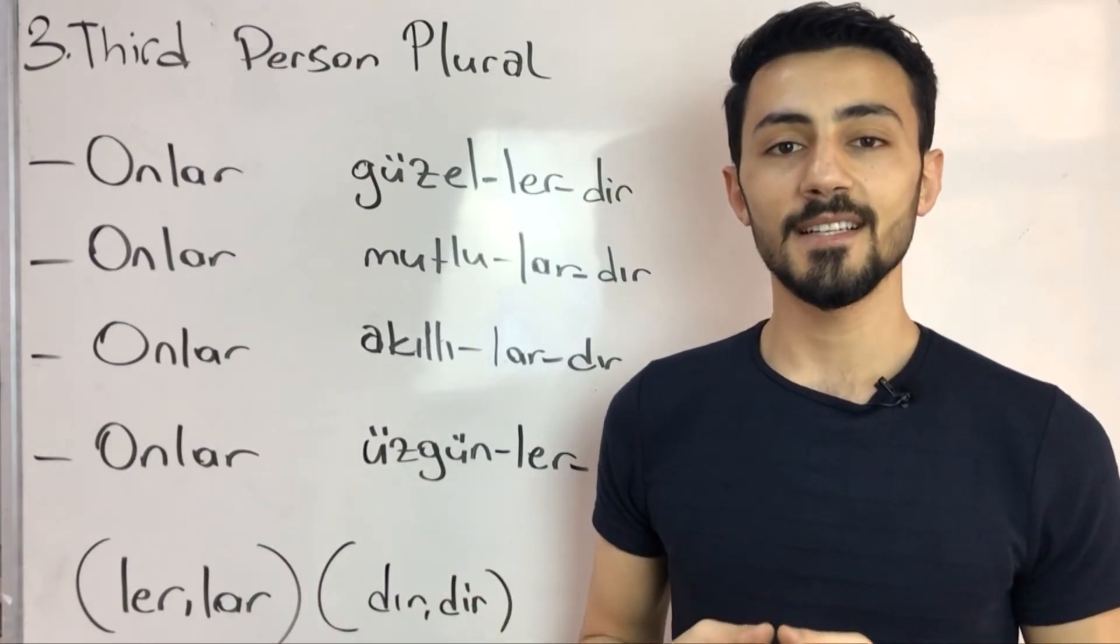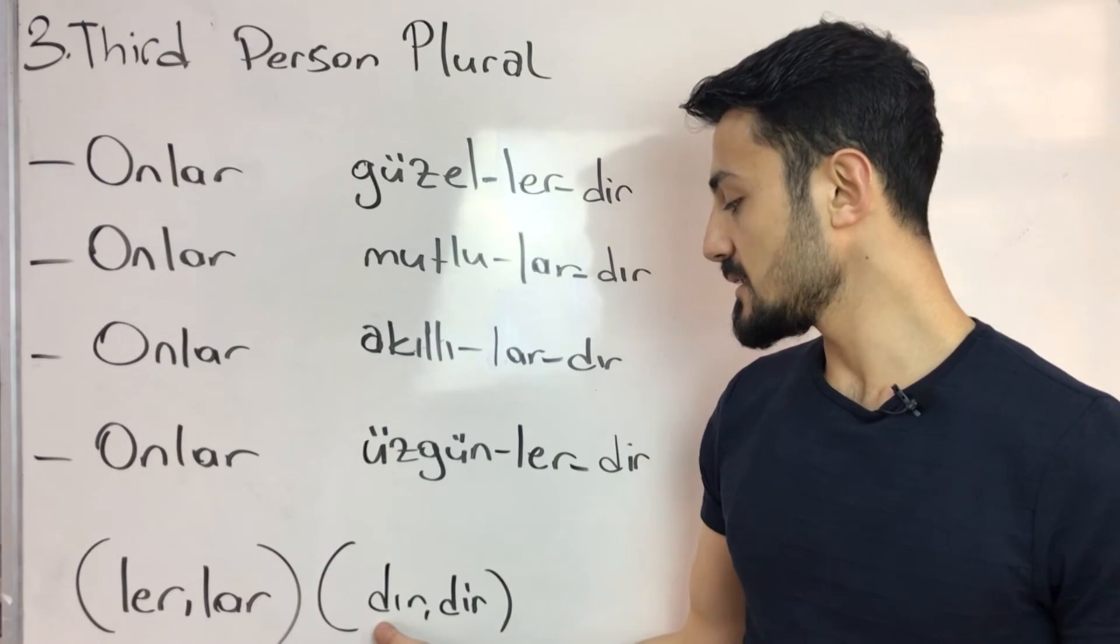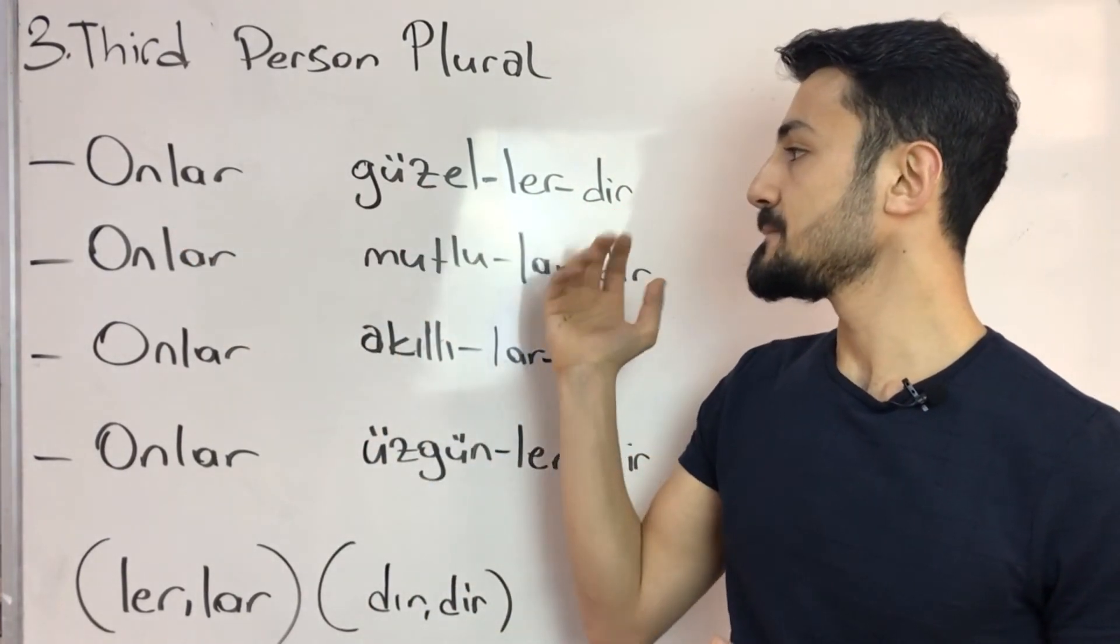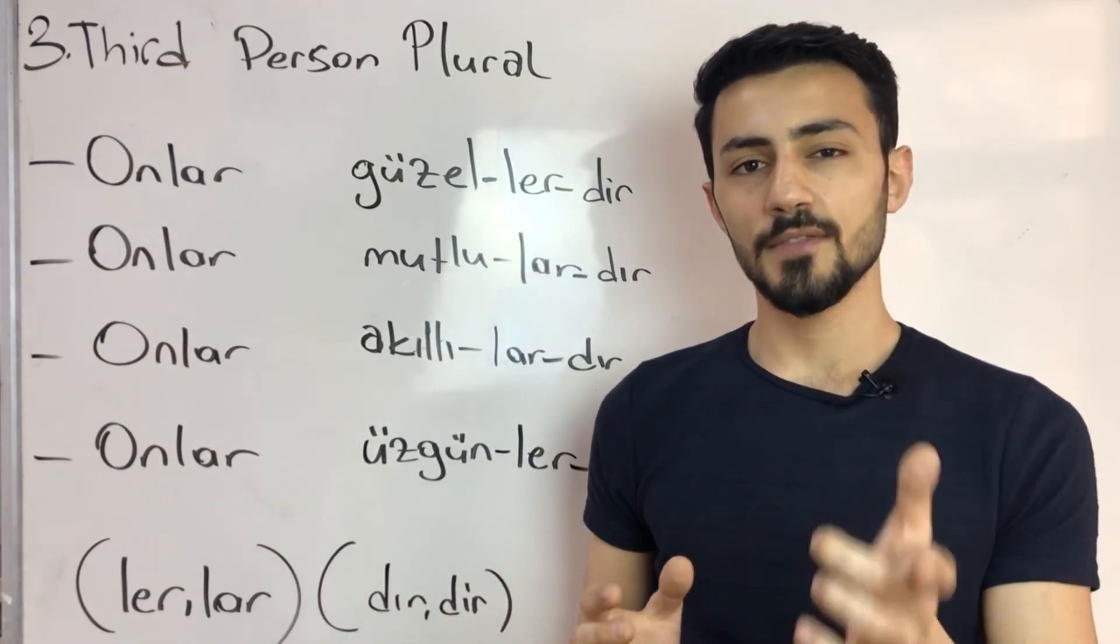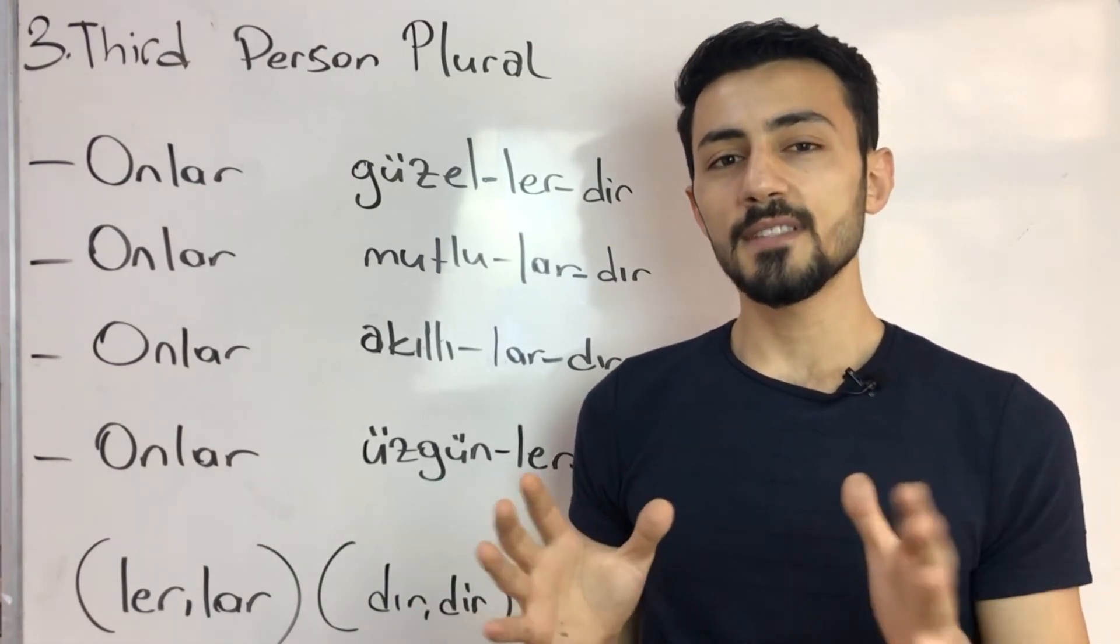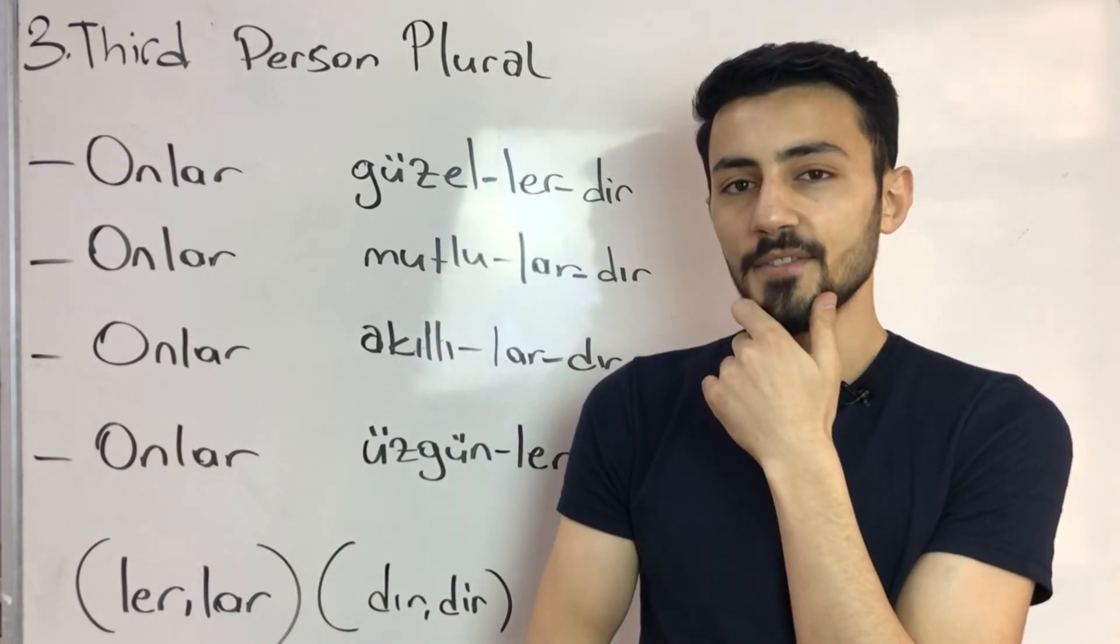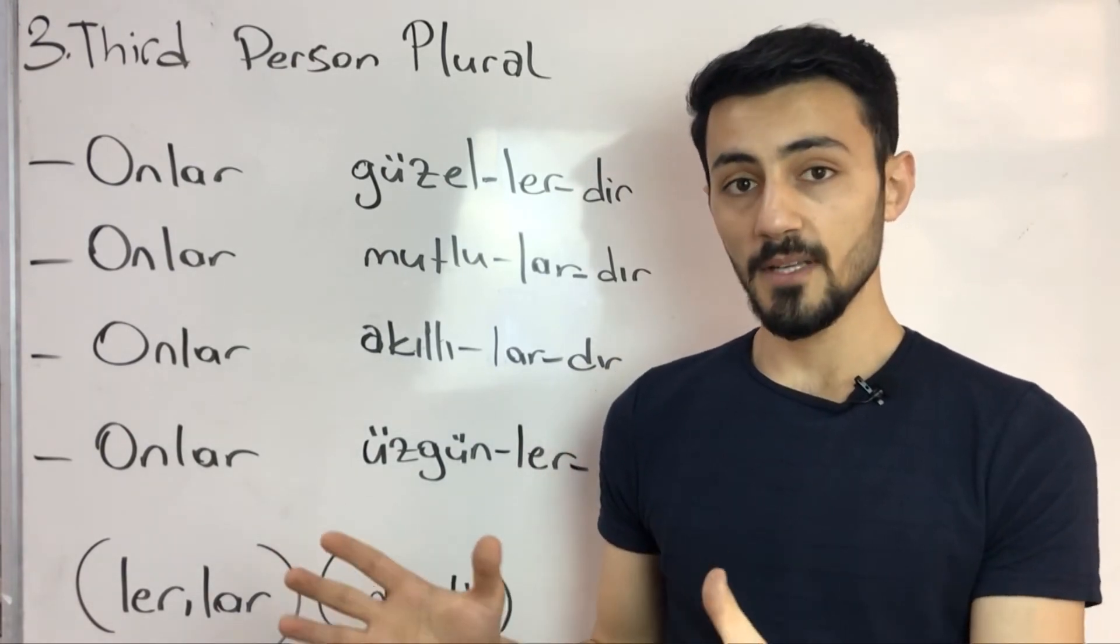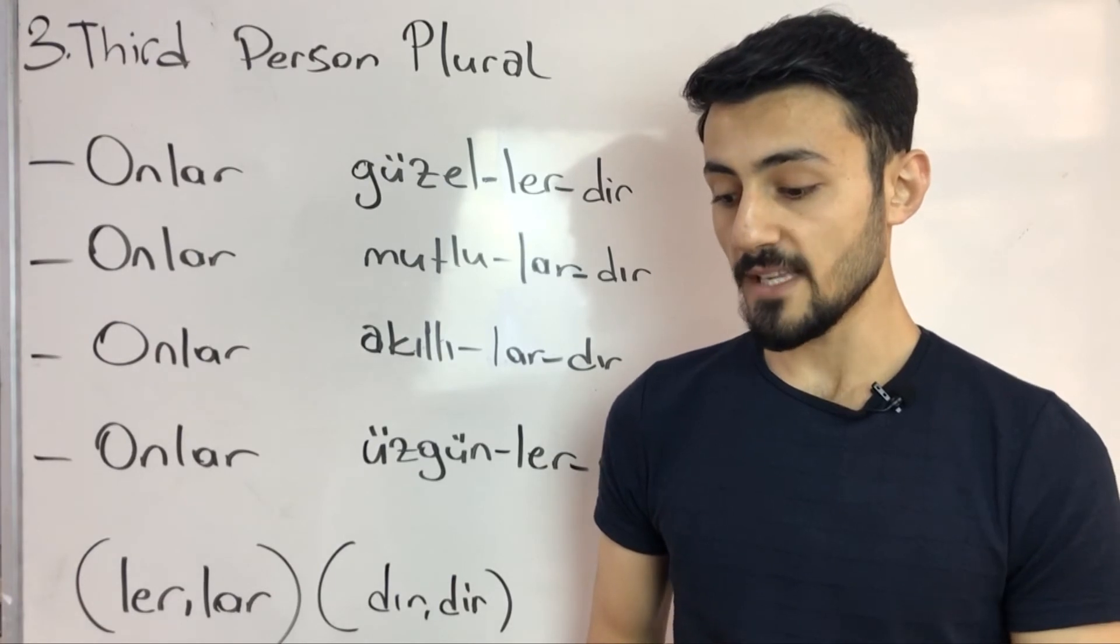Third person plural, the suffixes are ler, lardır, dir. Onlar güzellerdir - They are beautiful. I don't know how I'm going to translate it, just focus on the grammar. You don't see something, you just guess it. Onlar güzellerdir - They are beautiful. If you see something like flowers, beautiful things, just you're going to say they are beautiful. Onlar güzeller.